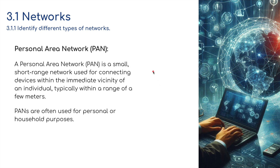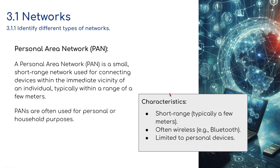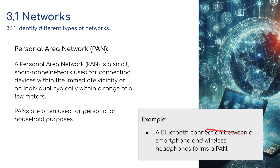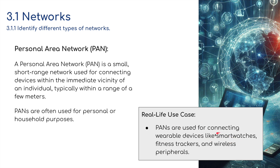A PAN — personal area network — is a very small, short-range network used for connecting devices within the immediate vicinity of an individual, typically within a range of a few meters. This might be your phone talking to your watch, which in turn is talking to your laptop. PANs are often used for personal or household purposes. For example, if you go to the beach and connect your phone to a Bluetooth speaker, that's a PAN. A Bluetooth connection between a smartphone and wireless headphones also forms a PAN. PANs are used for connecting wearable devices like smartwatches, fitness trackers, and wireless peripherals.